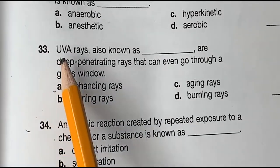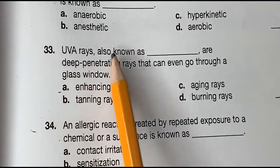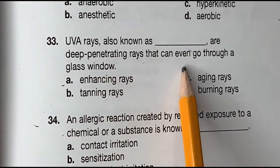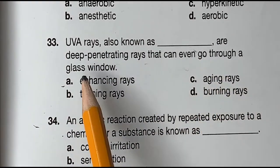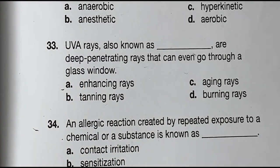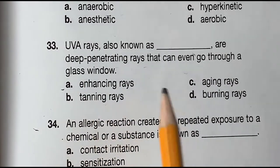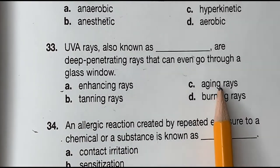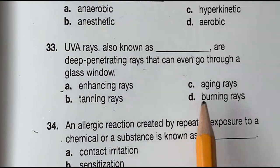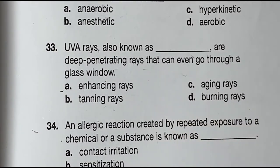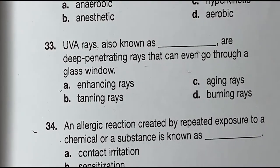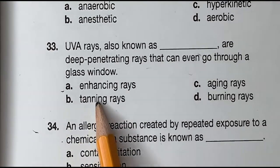Question 33: UVA rays, also known as blank, or deep penetrating rays that can't even go through a glass window. Is it A, enhancing rays. B, tannin rays. C, aging rays. Or D, burning rays. And the correct answer is B, tannin rays.